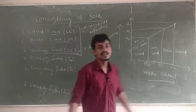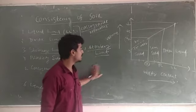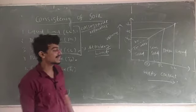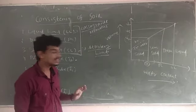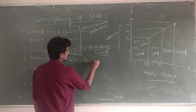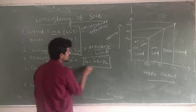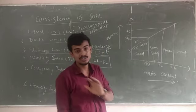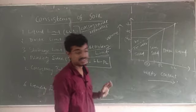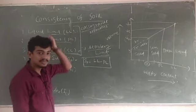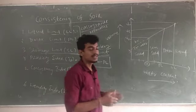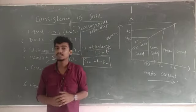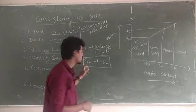These are called Atterberg limits. Next term is plasticity index. The formula is: Plasticity Index (IP) = Liquid Limit (LL) minus Plastic Limit (PL). This is a very easy formula to remember. This topic on consistency of soil will generally come for two to four marks — only short formula-based questions. Higher plasticity index means the soil has higher plasticity.